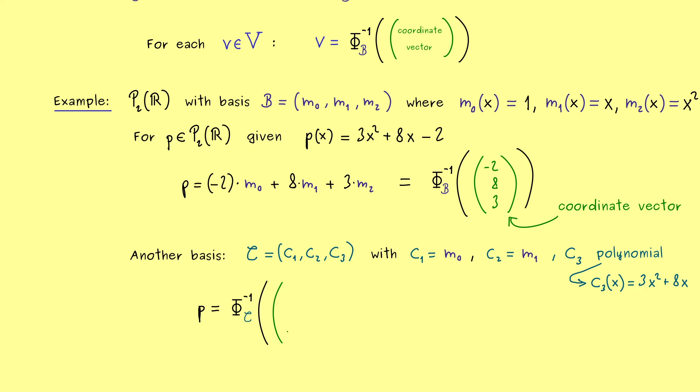In fact you should see we can take c3 one times. We don't need c2 but we need -2 times c1. So this is the coordinate vector that represents the same polynomial as before.